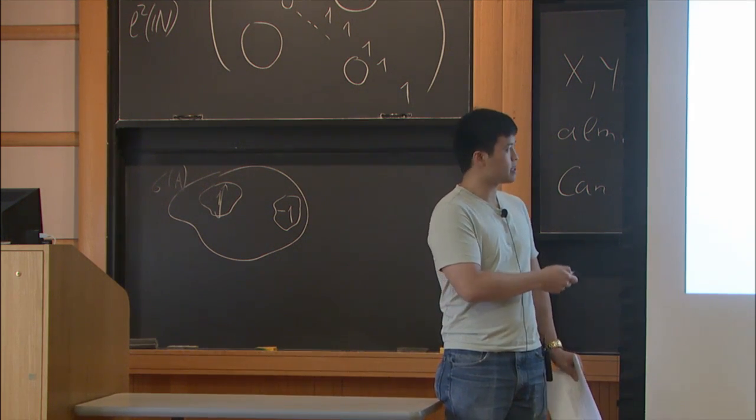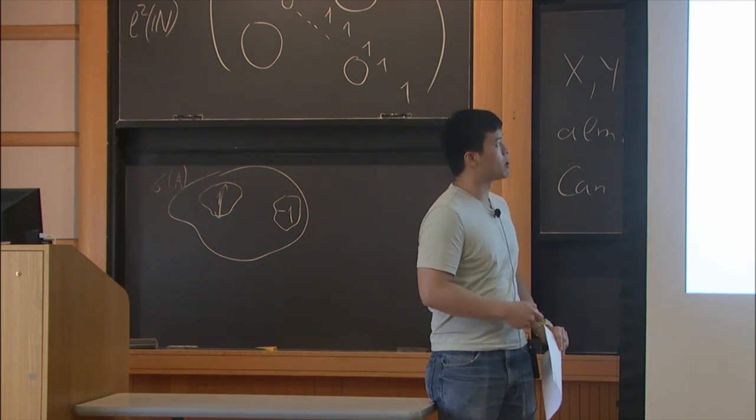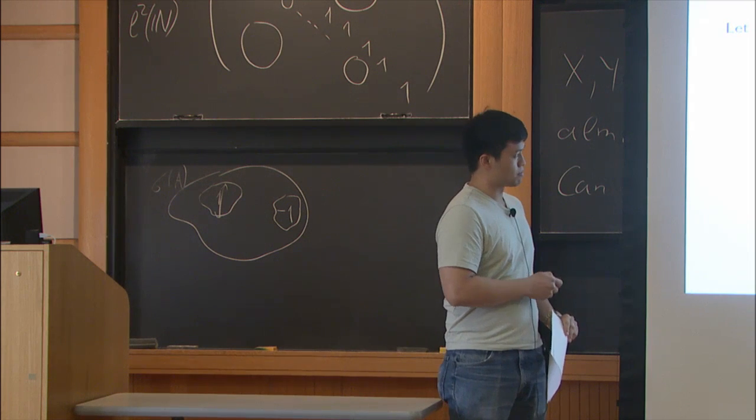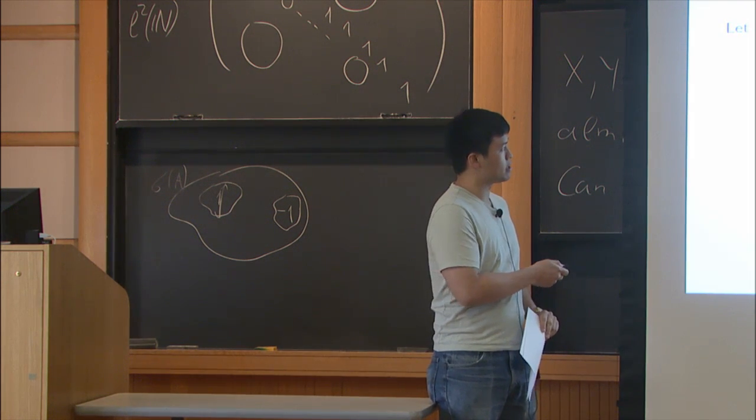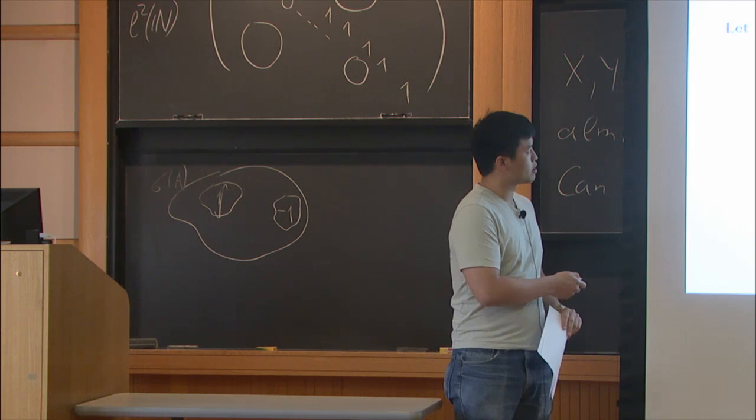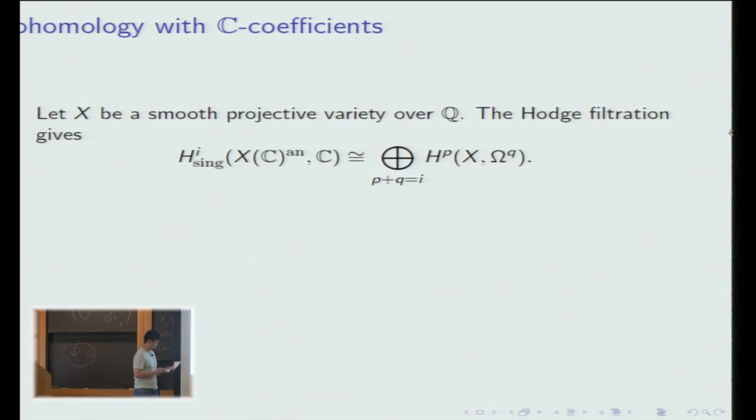Thanks for the invitation to speak. Let me start with some motivation from cohomology theories. We'll start with a smooth projective variety over Q, and the Kähler structure on X gives a Hodge filtration, so we have this decomposition of cohomology.